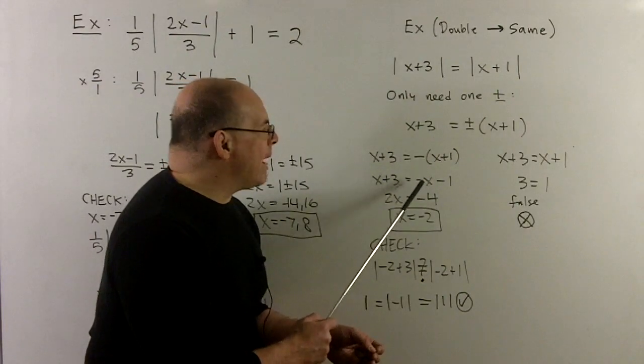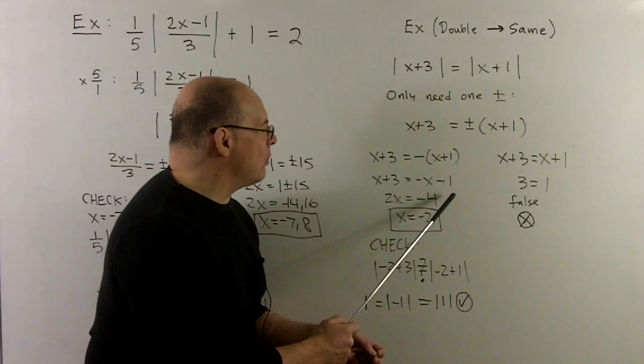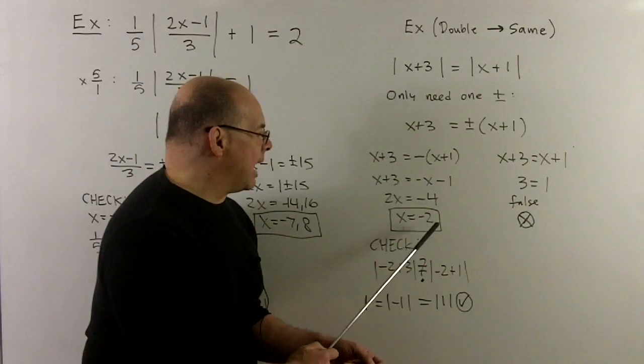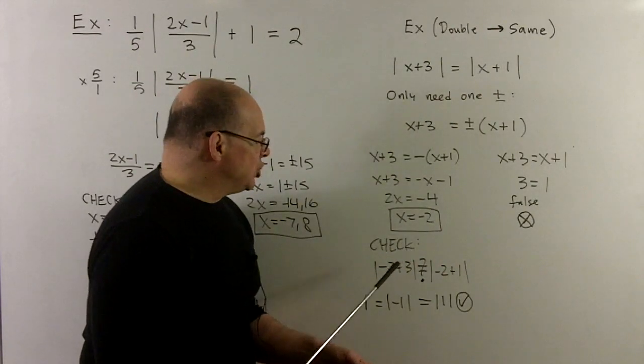So for that one, we'll get x plus 3 equal to minus parentheses x plus 1. We distribute, we get a minus x minus 1. And then when I do the algebra, we'll wind it with an x equal to minus 2. If I check,